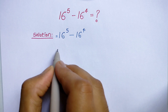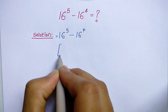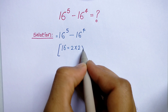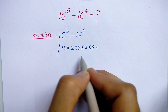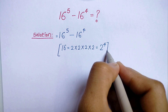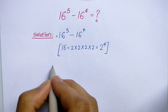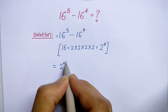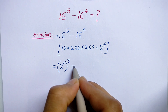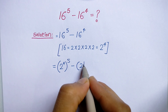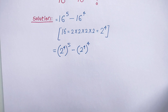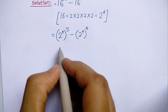Now we can write 16 as 2 into 2 into 2 into 2, which means 16, and we can write this as 2 to the power 4. So the expression becomes 2 to the power 4, all to the power 5, minus 2 to the power 4, all to the power 4. We know the exponential rule that is: